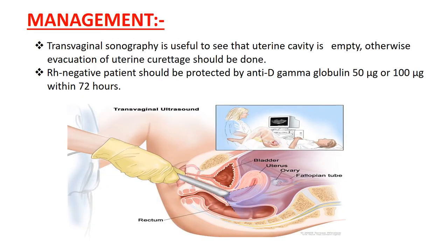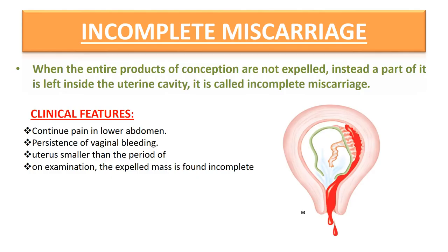TVS is done to confirm that the uterine cavity is empty; otherwise, evacuation of the uterine cavity should be done. RH-negative patients should be protected by anti-D gamma globulin 50 mcg or 100 mcg in cases of early or late miscarriage respectively, within 72 hours.